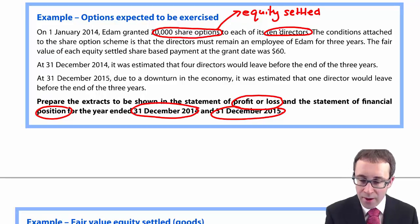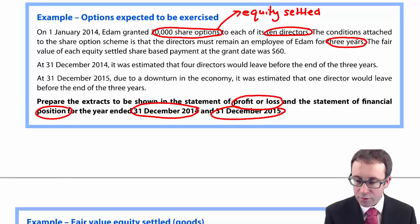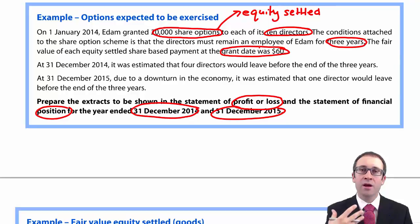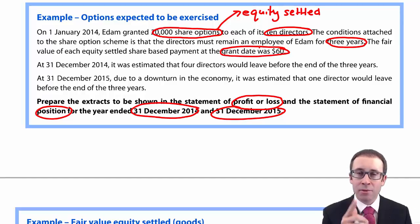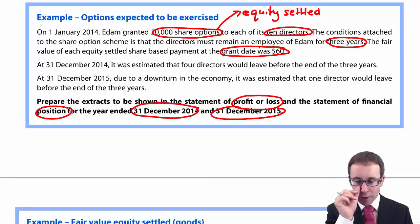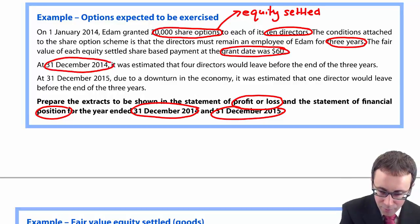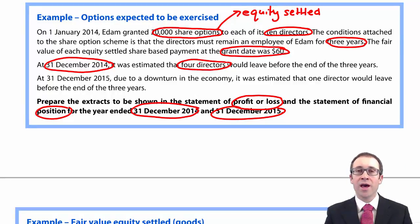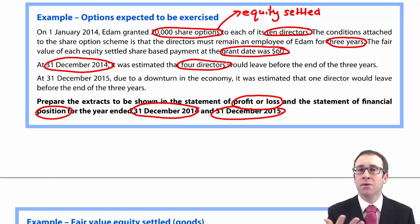The conditions are that the directors must remain an employee for three years. The fair value of each equity-settled share-based payment at the grant date was $60. We take the fair value at the grant date and spread it over the three-year vesting period based upon the number of employees expected to exercise the option. At December 2014, it is estimated that four directors would leave before the end of the three years, so we started with 10 and expect four to leave, giving a figure based on six employees.